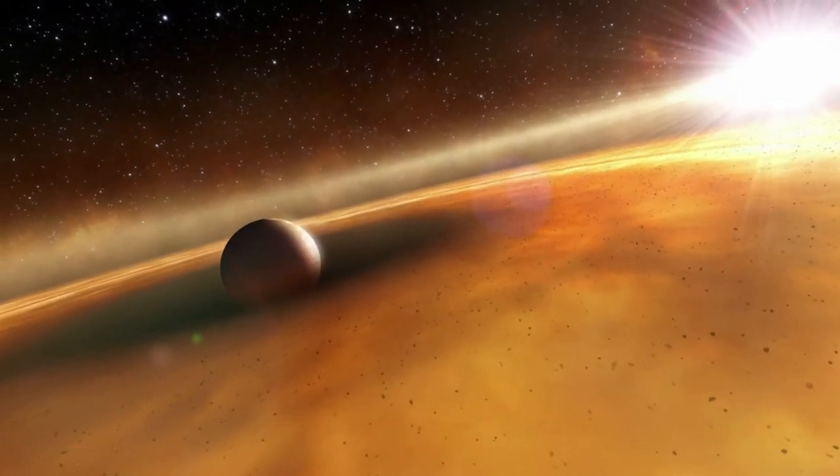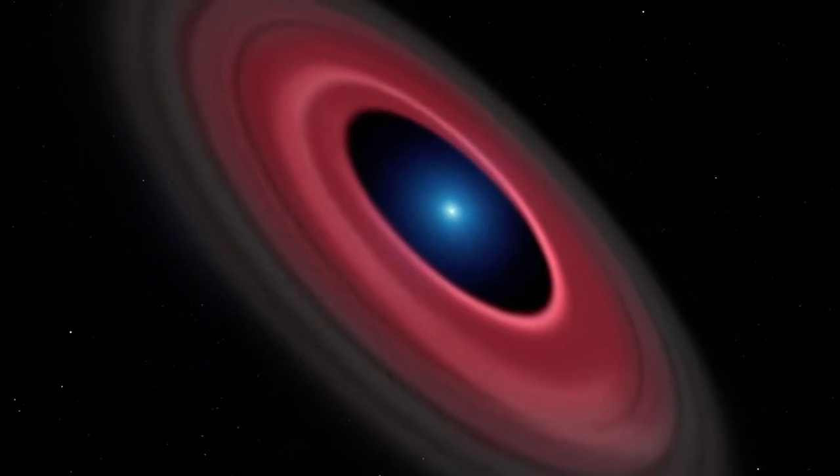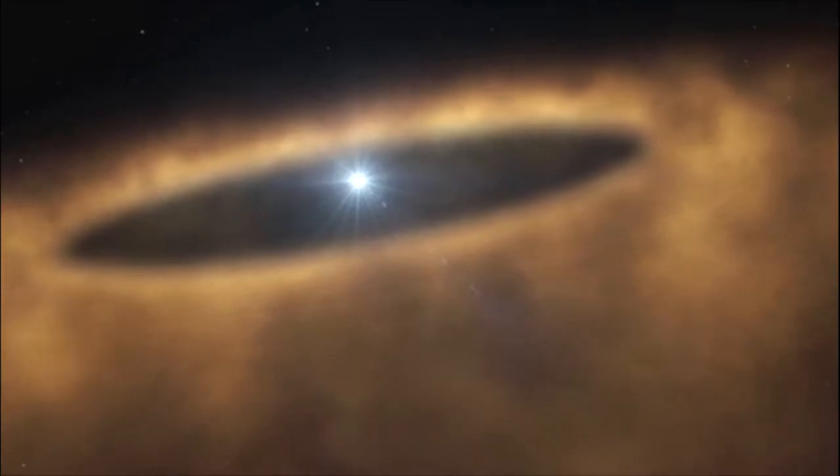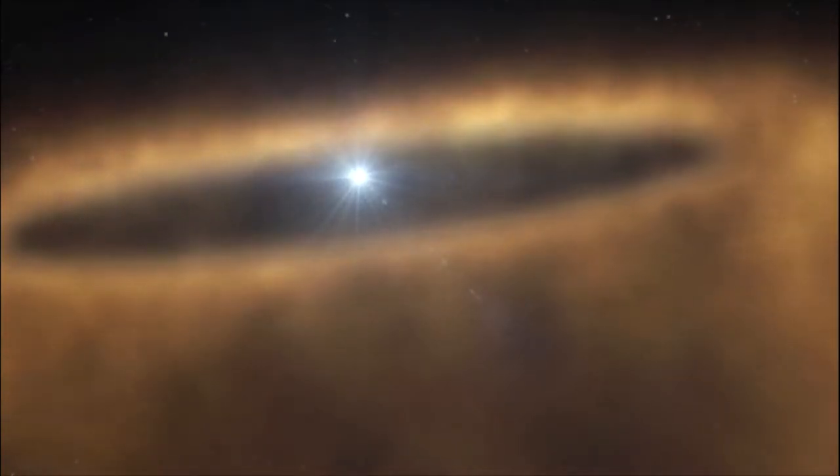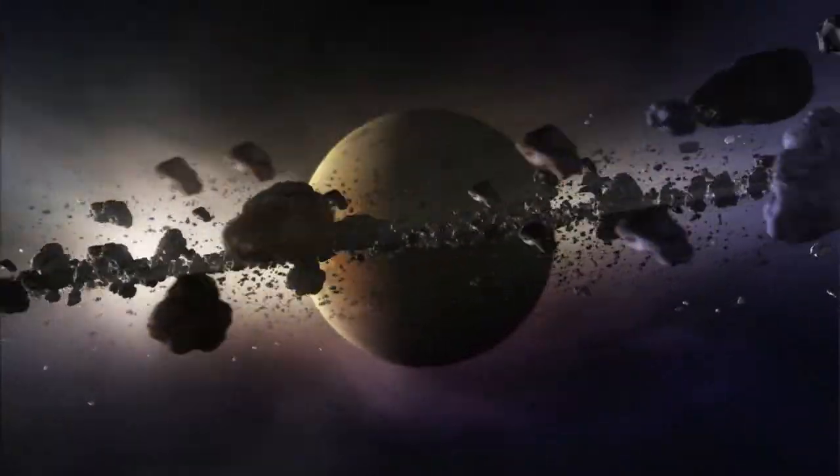When comets are sublimating, you're going to see a lot of release of gases and dust, and the light that's reflected off of the dust ends up being brighter than the light that's reflected off of the planets we want to observe.